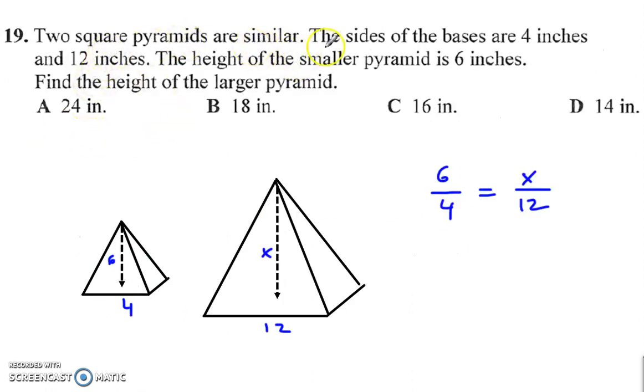Two square pyramids are similar. The sides of the bases are 4 inches and 12 inches, so one of them has 4, the other has 12. The smaller pyramid has a height of 6 inches, so we want to find this one, set up a proportion. So that's 6 over 4 is equal to 12 over x, and then either you can see the factor here is 4 times 3, so you do 6 times 3 and get 18, or you just solve by cross-multiplying.